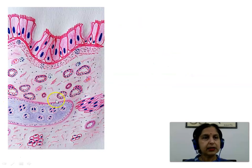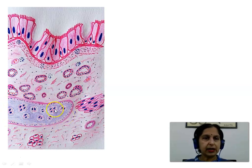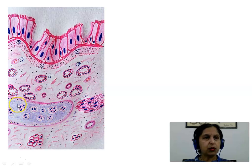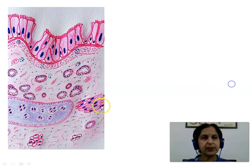Here we see the posterior end of the C-shaped cartilage ring. It is hyaline cartilage showing chondrocytes present as cell nests surrounded by lacunae, along with the homogeneous glassy matrix. The perichondrium shows outer fibrous and inner cellular layers. We also see the fibroelastic tissue and the trachealis muscle made up of smooth muscle fibers.